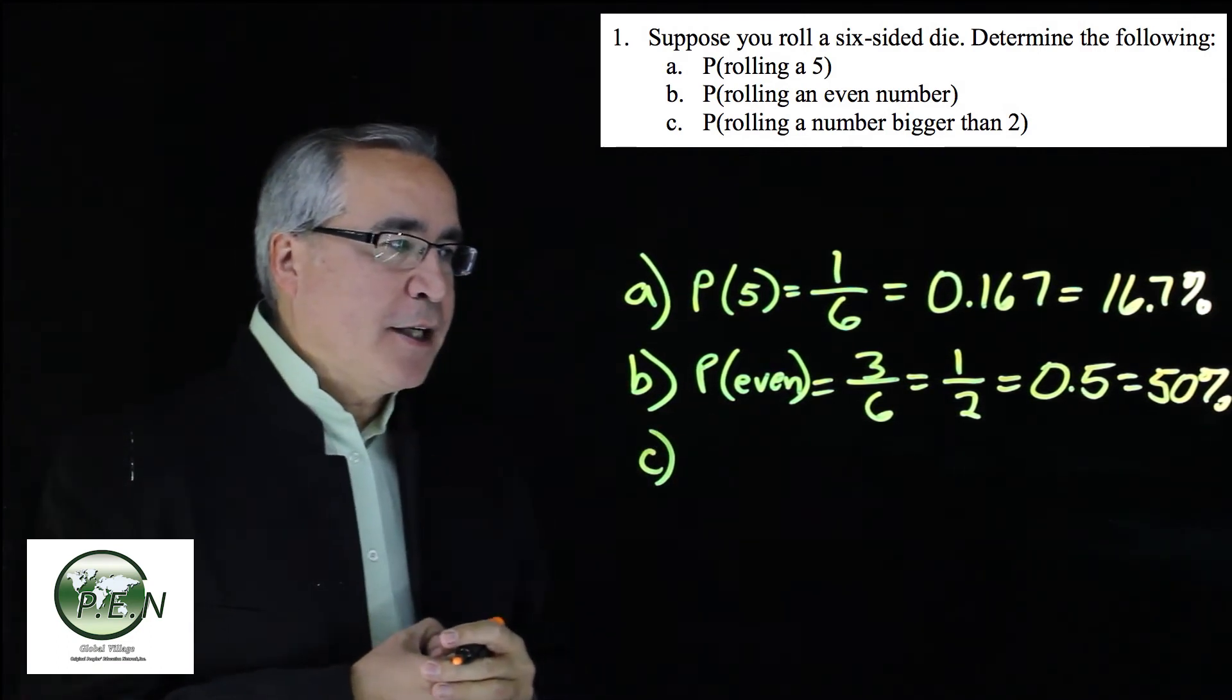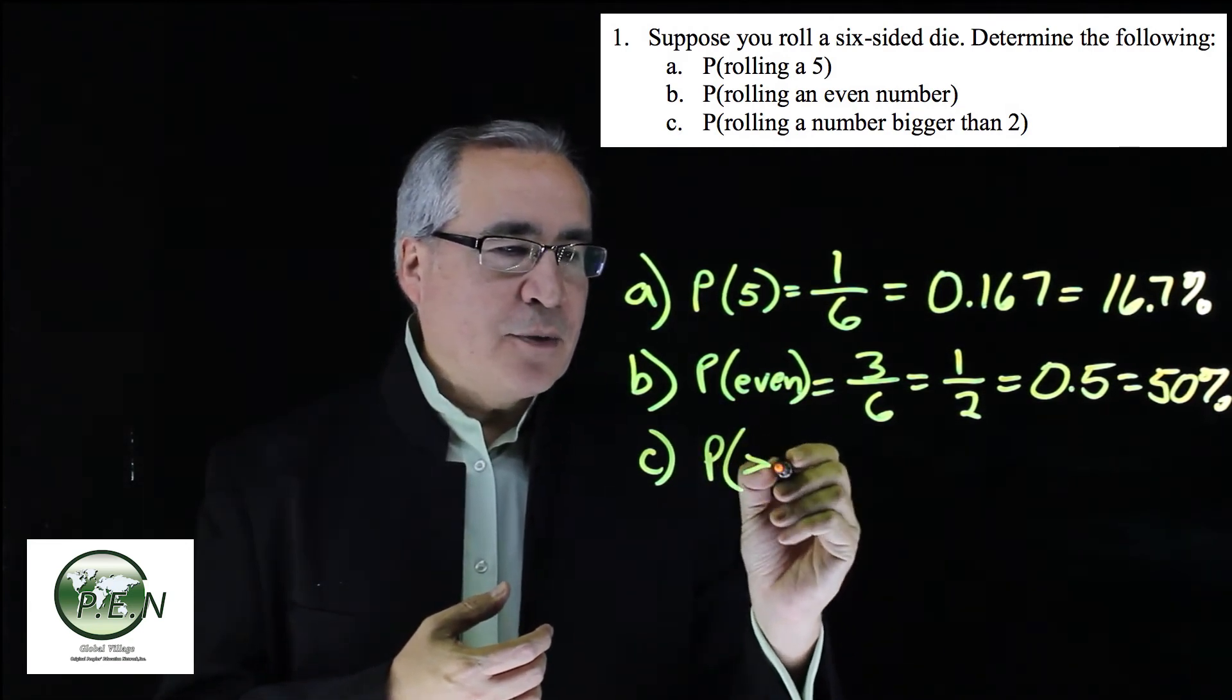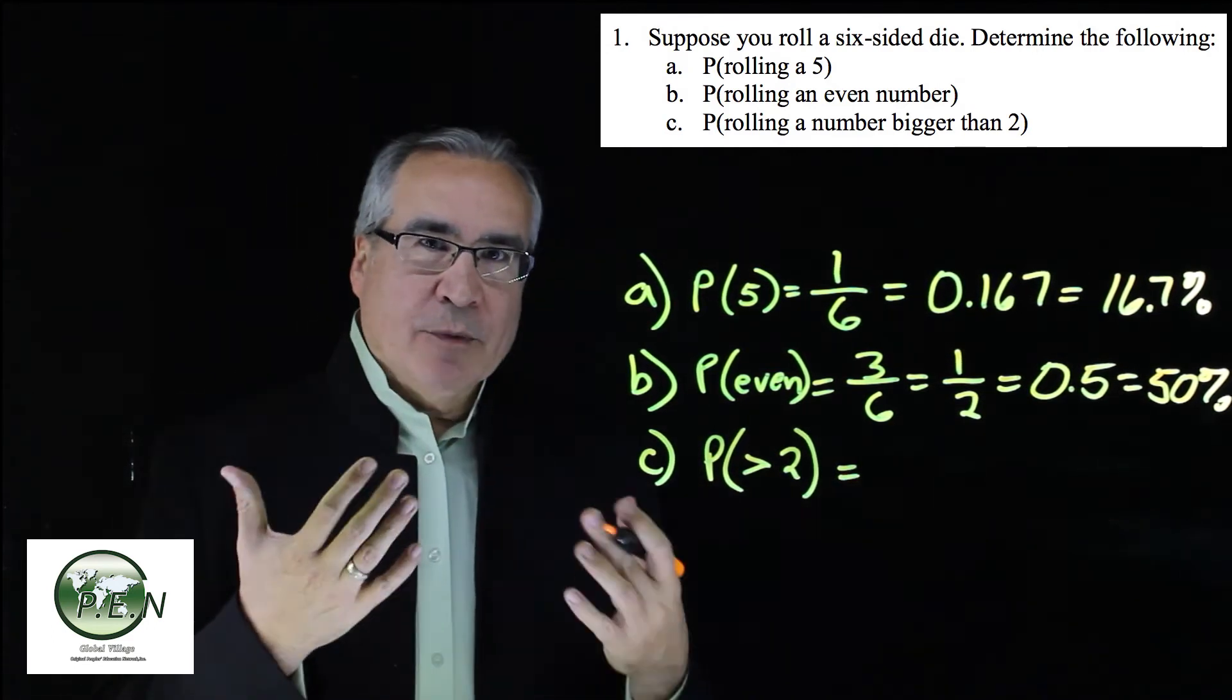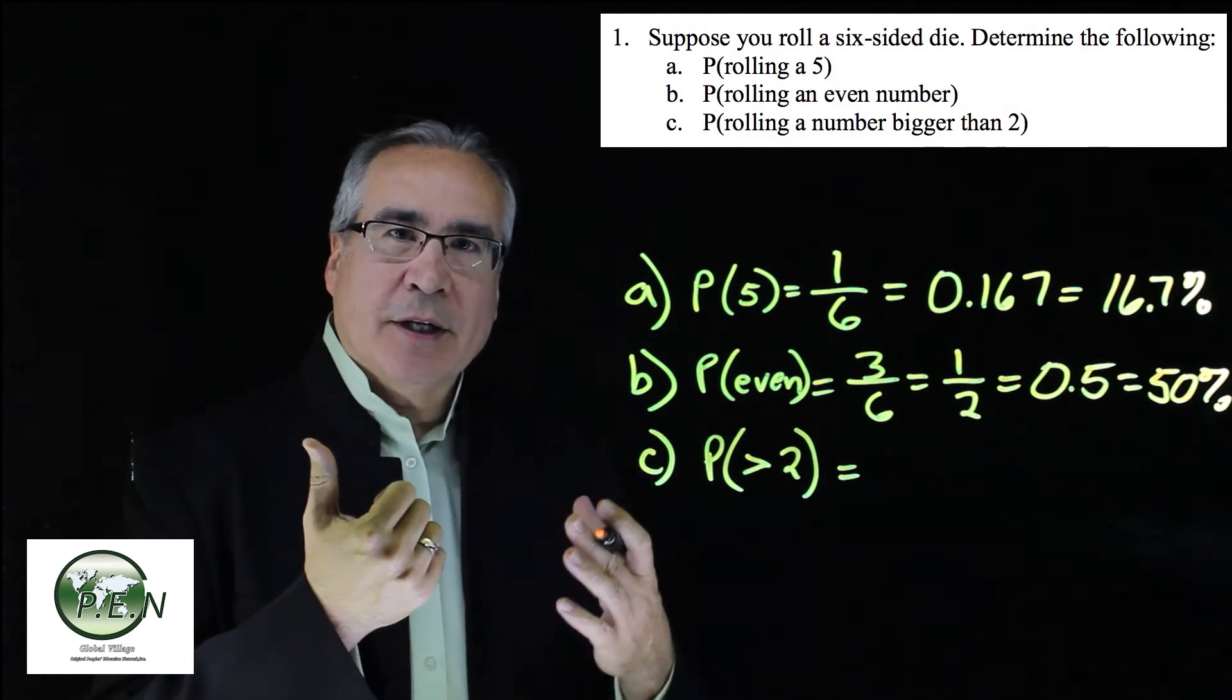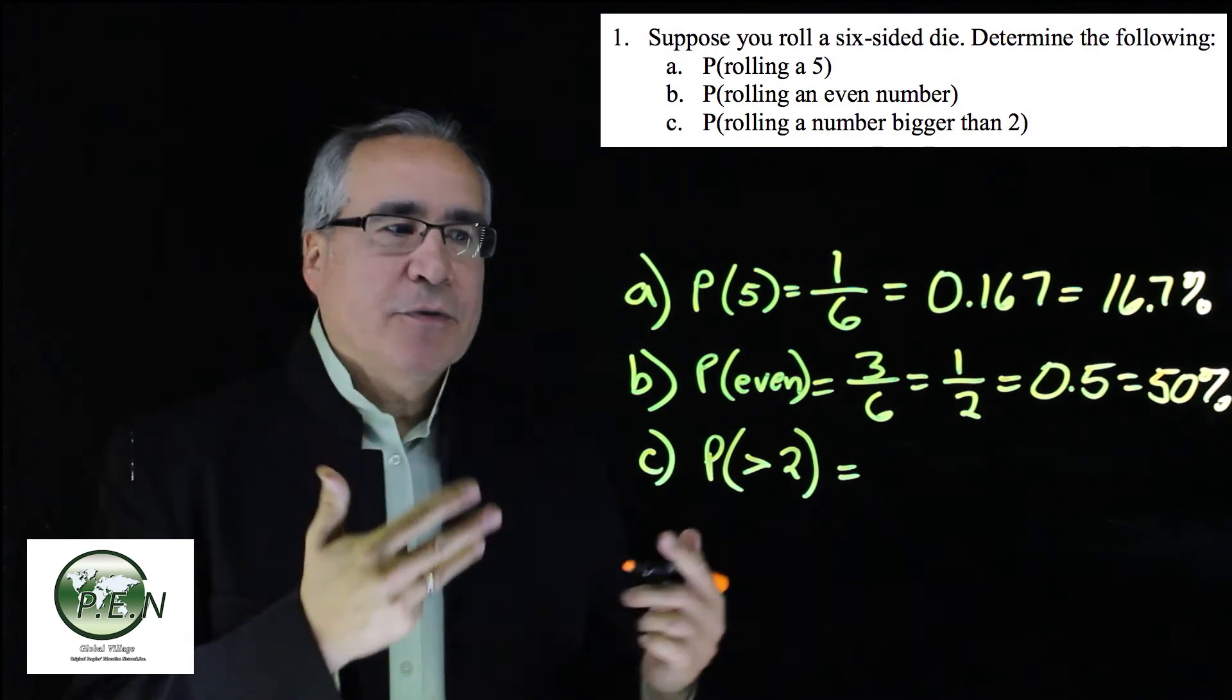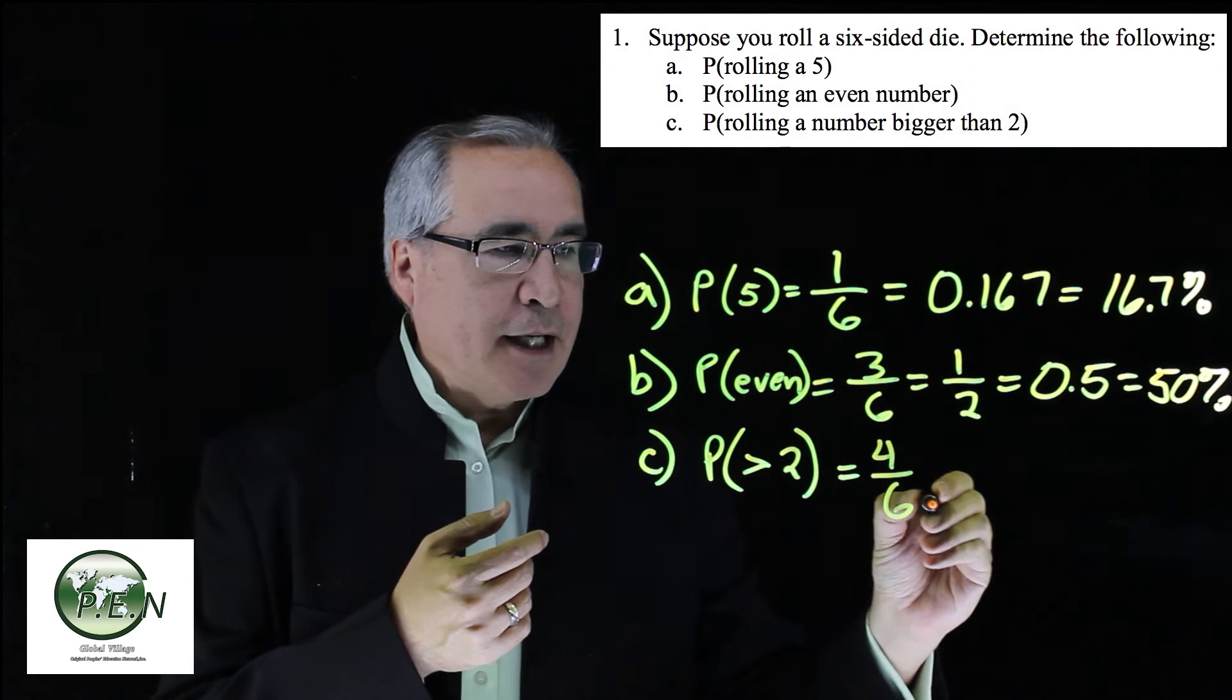The C question comes along and asks us, what's the probability of getting a number that is greater than 2? So we start counting what numbers are greater than 2. 2? No, no. 2 is equal to 2, not greater. So we start with 3, 4, 5, 6. That's 4. 4 numbers are greater than 2 out of a total of 6 on the die.